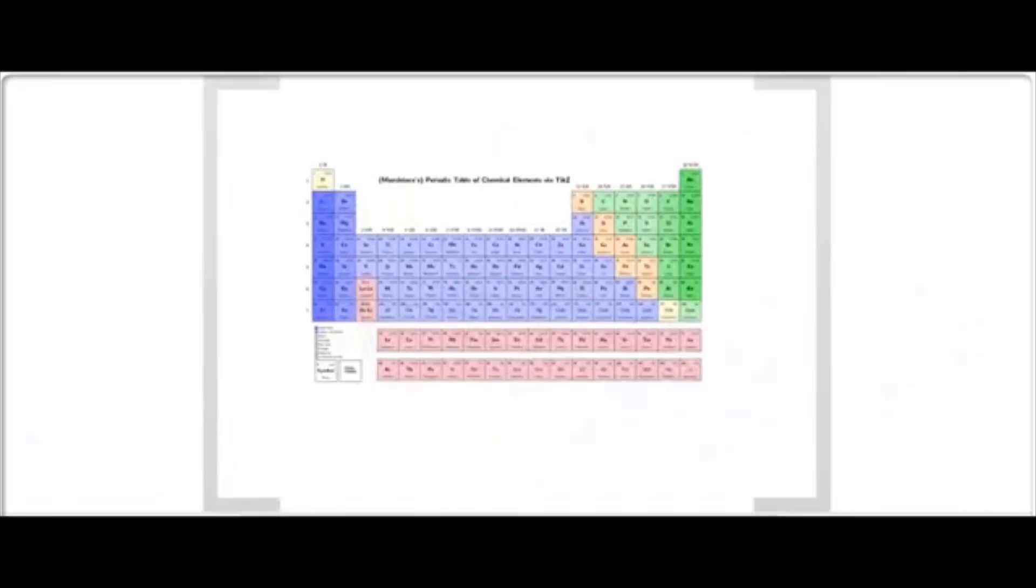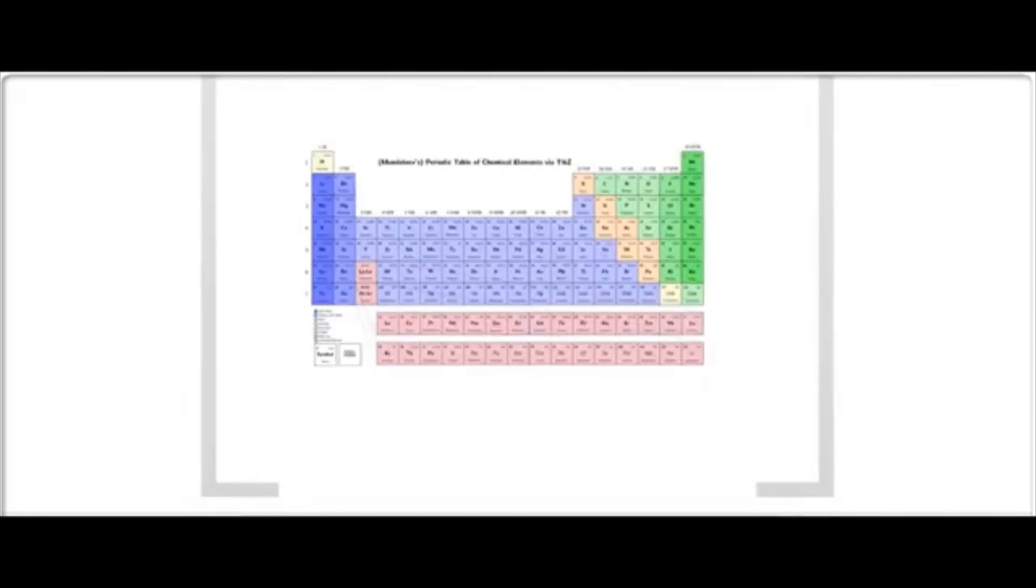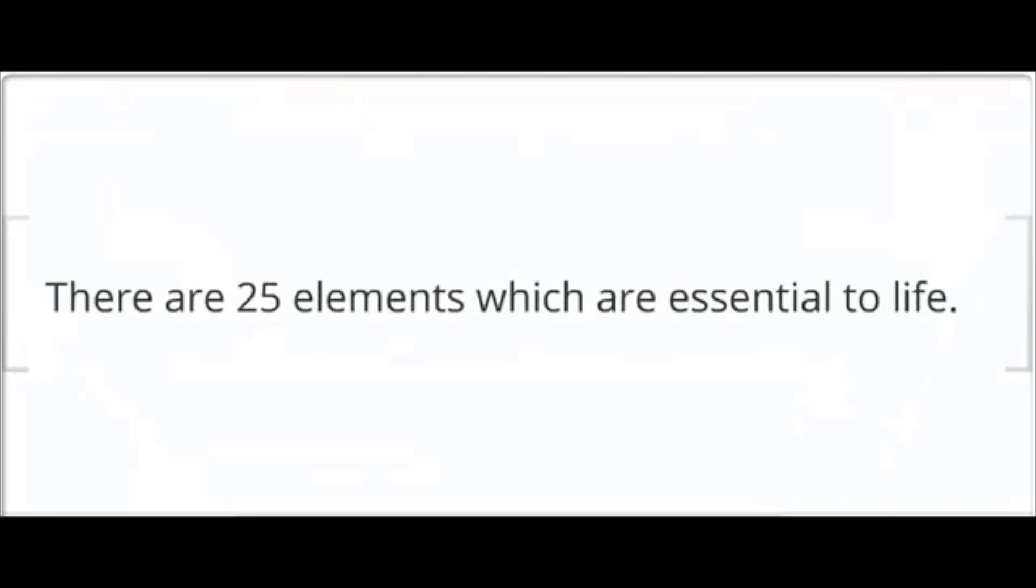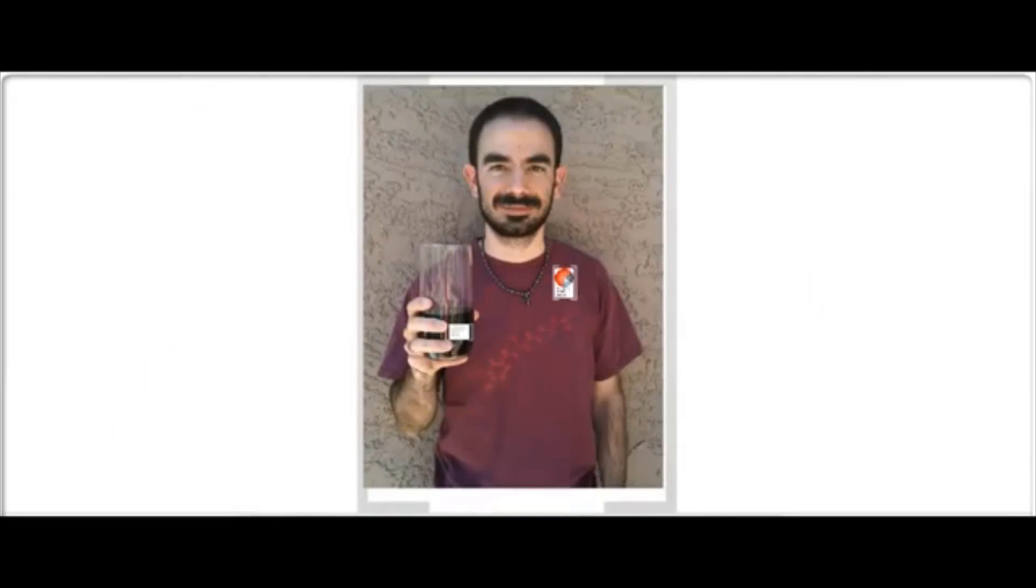The concept that life is made up of similar matter to nonliving substances is true. There are 25 elements which are essential to life as we know it. But the elements that make up life are also used to make nonliving matter as well.